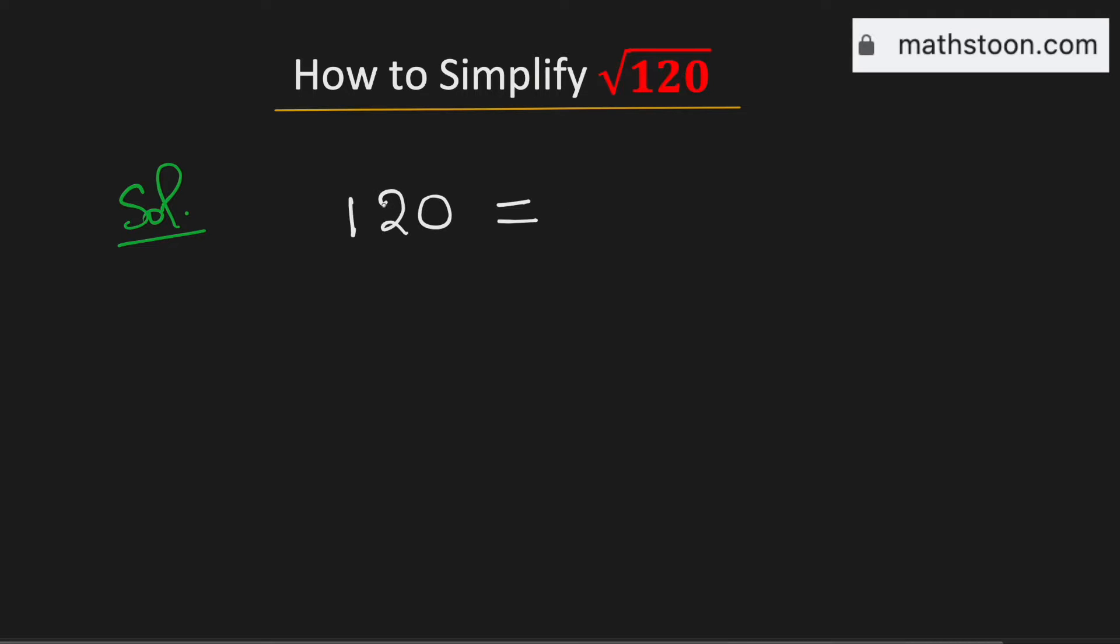We know that the perfect square 4 can divide 120. So we can write 120 as 4 times 30.